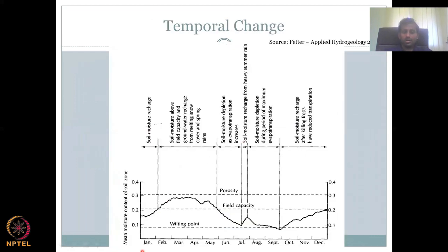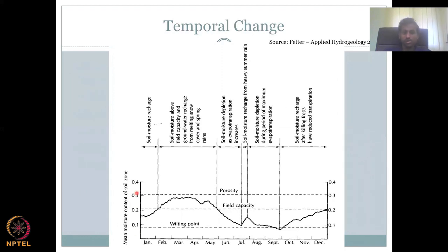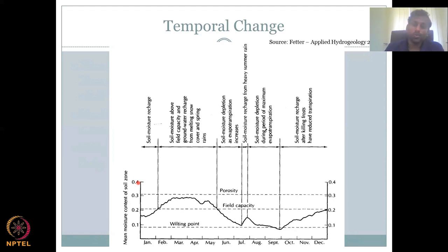Here is time on the x-axis and mean moisture content of soil on the y-axis — a temporal change in mean moisture content. Your soil moisture content is not constant throughout the year. Porosity is constant, but water can go in or come out depending on use.